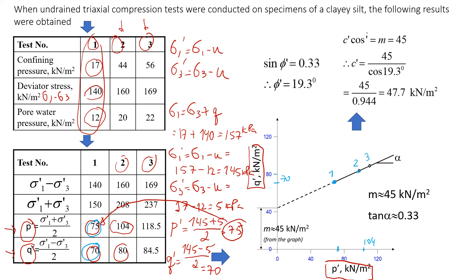What we do next is we will draw a line, best line of best fit. And then see where it crosses q dash point here. So it will be approximately 45 points.